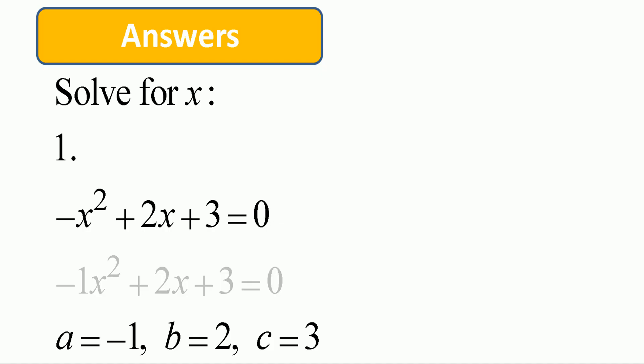Negative x squared plus 2x plus 3 is equal to 0. So compare it with ax squared plus bx plus c is equal to 0.